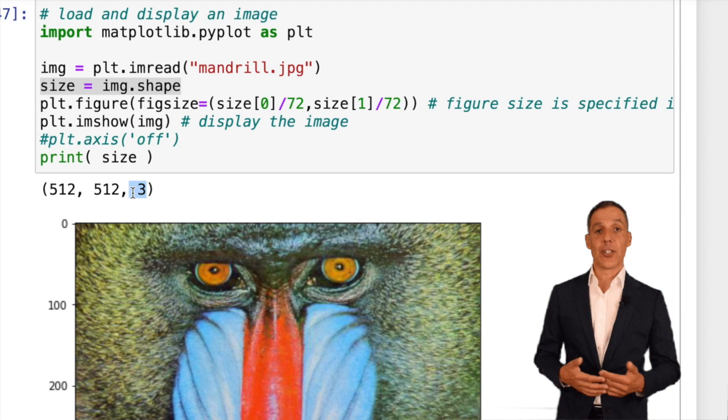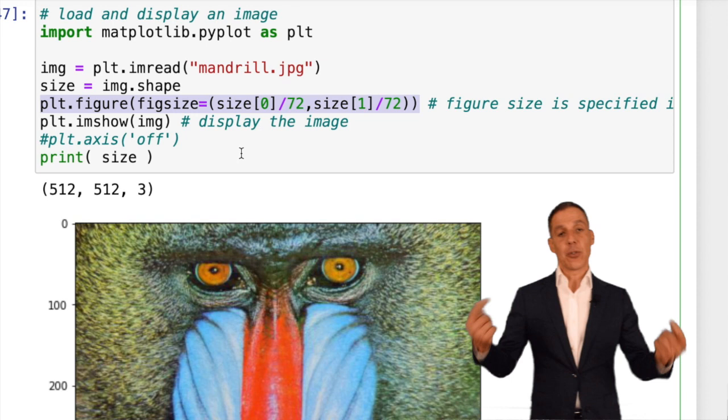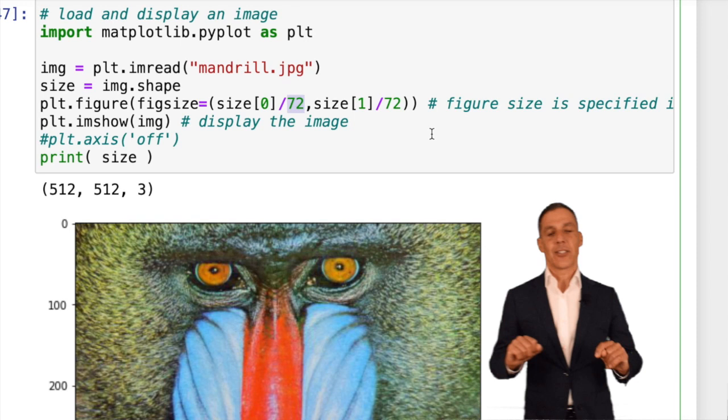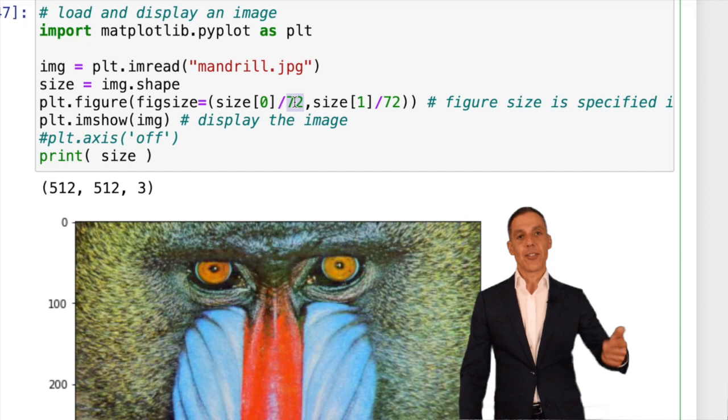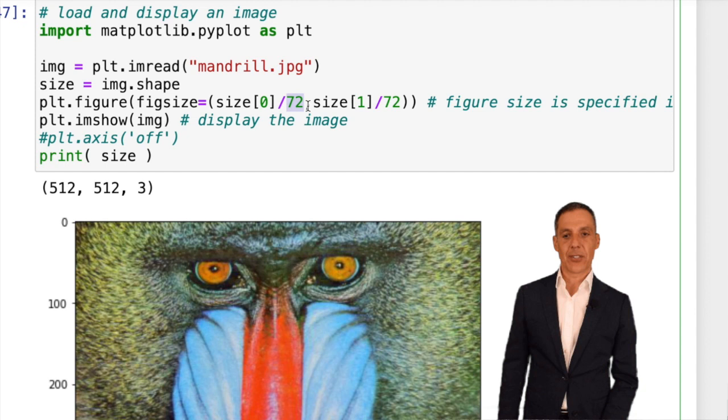Grayscale images are one channel and sometimes you have a fourth channel, which is an alpha channel. I'm going to create a figure to display this image by specifying the size using the dimensions I just determined. Size 0 is 512, size 1 is 512, and I divide by 72, which is 72 dots per inch. When you specify figure size, it's in inches. If I have this many pixels divided by pixels per inch, I get inches. I like doing this conversion because it guarantees a certain resolution.